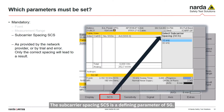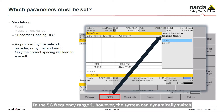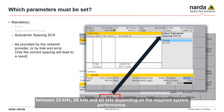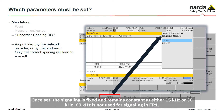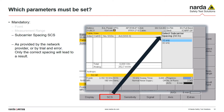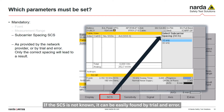The subcarrier spacing SCS is a defining parameter of 5G. The SCS for 4G was fixed at 15 kHz. In the 5G frequency range 1, however, the system can dynamically switch between 15 kHz, 30 kHz, and 60 kHz depending on the required system performance — but this applies only to the traffic. The signaling is fixed and remains constant at either 15 kHz or 30 kHz; 60 kHz is not used for signaling in frequency range 1. If the SCS is not known, it can be easily found by trial and error — there will only be a measurement result when the value is set correctly.